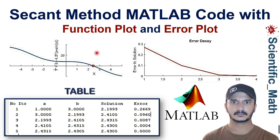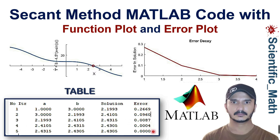We will include a function plot and an error plot. As we can see, this is the graph of the function, and here is the numerical solution where the function intersects the x-axis. This is the graph of the error in our solution — as the number of iterations increases, the error decreases and becomes completely zero after some iterations.